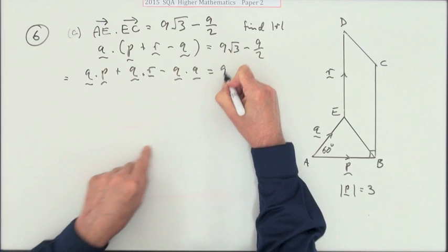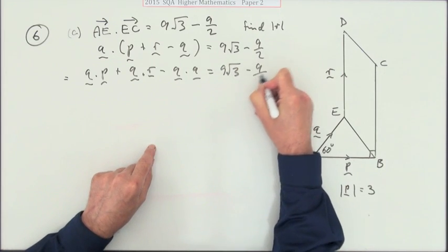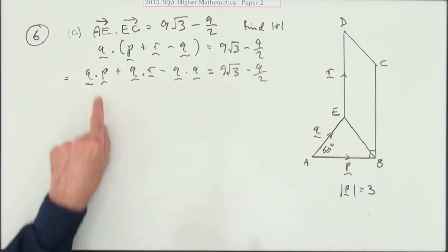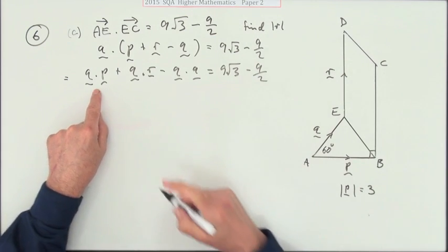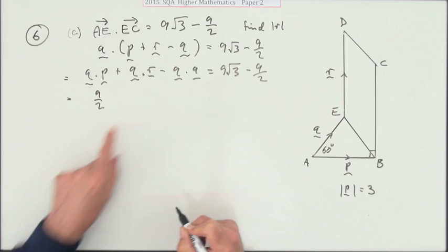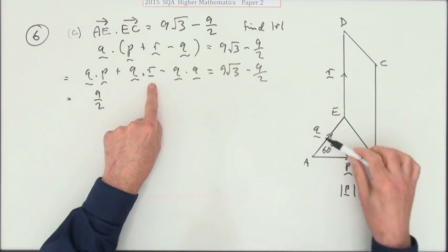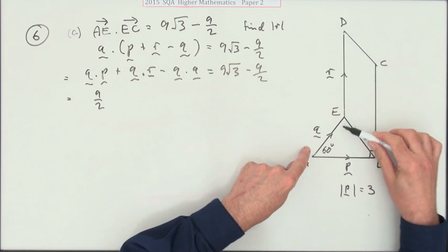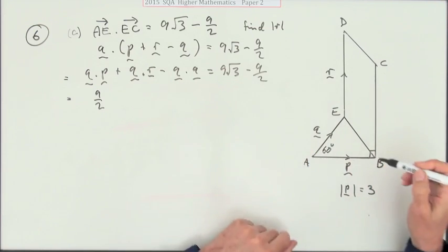Now some of these we know already. q dot p you had in the first bit—q dot p was 9 upon 2. q dot r: now q dot r are obviously connected. You can figure out the angle. We have to have them radiating from the same point.